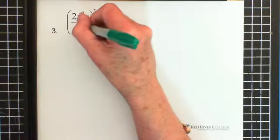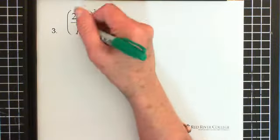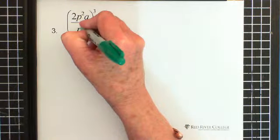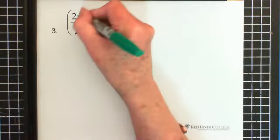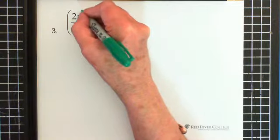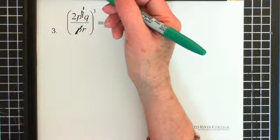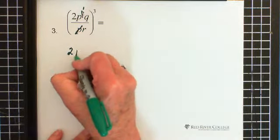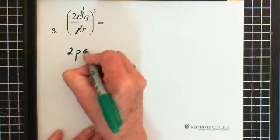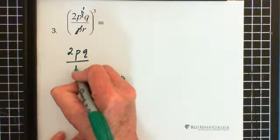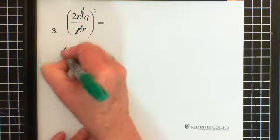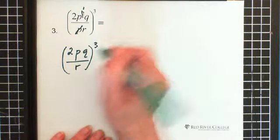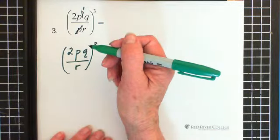So I have p to the power of 1 down here and I have p squared up here. So using the shortcut, I'm just going to get rid of this p and get rid of one of the p's up here. And that leaves me with p to the power of 1 up here. So I'm just going to rewrite it so I'm clear. So I have 2pq over r and it's all cubed.